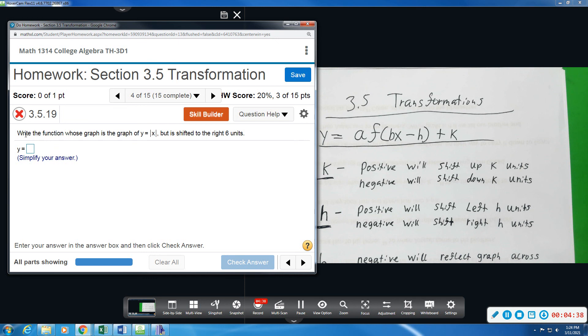All right, number four. We want to write the function whose graph is absolute value, but it's shifted to the right six units. So H will shift it left if it's positive and right if it's negative. So we want to go right six units. So I'm looking for a minus six. So what I want to do here is absolute value x minus six, because that's what we will see to shift right six units.